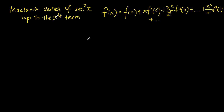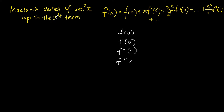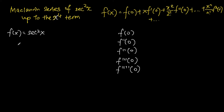So what we are going to do is use the top right-hand corner equation to express our secant squared x as an infinite series. The first thing we need to find is f, f prime, f double prime, f triple prime, and f quadruple prime, all evaluated at zero. In order to find all of these, we need to differentiate secant squared x one time, two times, three times, and four times.